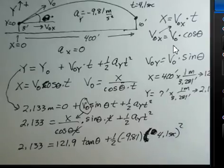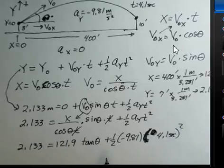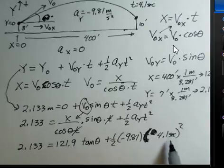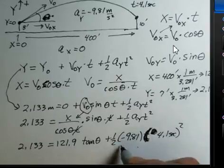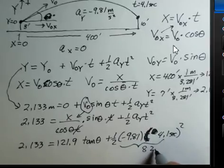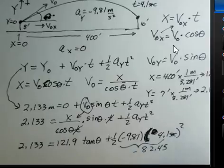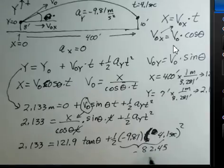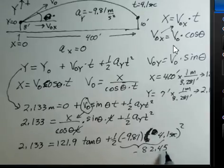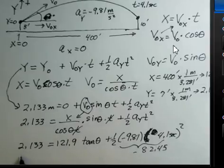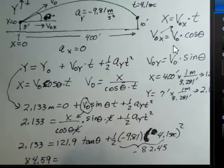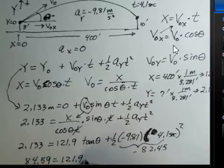So the process here, take minus 9.81, divide by 2, multiply by 4.1 squared. And this will produce 82.45. You should check that. And now we have to add that to both sides. When I add 82.45 to minus 82.45, of course it adds to zero here. But it accumulates over here, and I get 84.59 roughly equals 121.9 tangent theta.